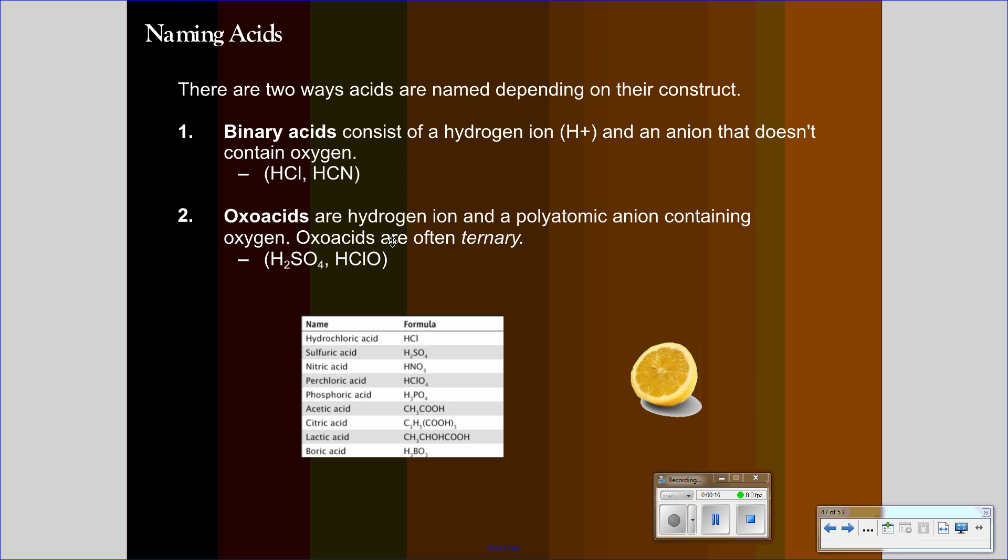Two ways acids are named depending on the way they're built. First, there's binary acids that consist of a hydrogen ion and an anion that doesn't contain oxygen. Usually they're going to be binary, like hydrochloric acid, hydrobromic acid, hydroiodic acid. But there's also hydrocyanic acid, which is hydrogen bound to the cyanide anion. There's a lot of qualifications that go into something being an acid. For now, when we see hydrogen beginning a molecule, it's not something like water, we're going to call it an acid.